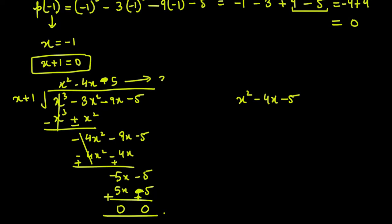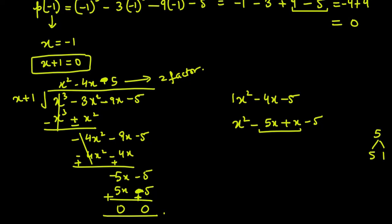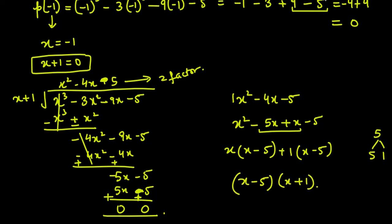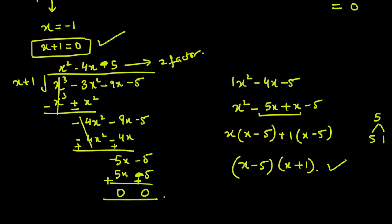From x square minus 4x minus 5 we can find 2 more factors. Here the first coefficient is 1 and last is 5, so 1 × 5 = 5. Factors of 5 are 5 and 1. We use them to get minus 4, so we write x square minus 5x plus x minus 5. From the first two take x common: x(x minus 5). From the last two take 1 common: 1(x minus 5). So factors are (x minus 5) and (x plus 1).